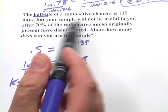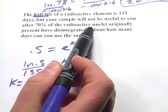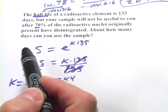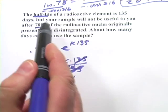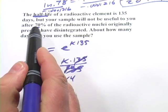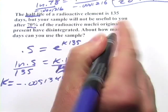And now it says, we have to read this carefully. It says, your sample will not be useful to you after 70% of the radioactive nuclei have disintegrated. So we want to find what point that happens, because that's how long it'll be good until. The question is, how much is left? And when 70% have decayed, that means 30% are still there.